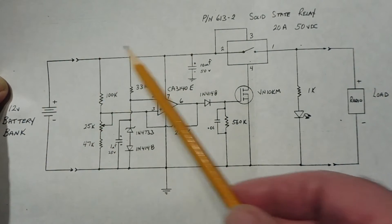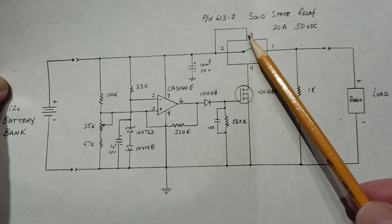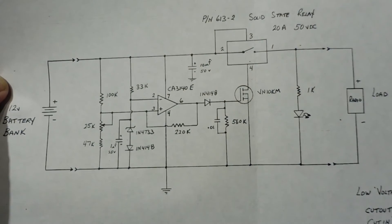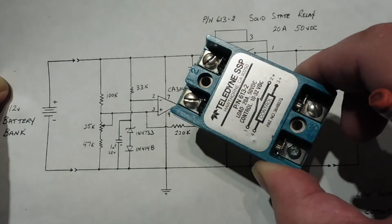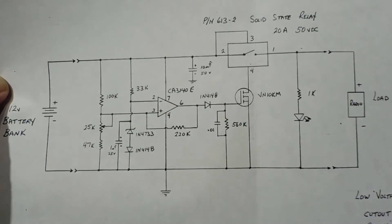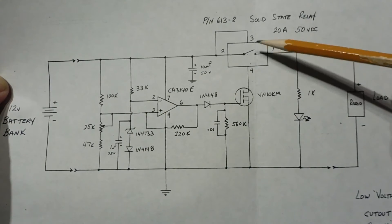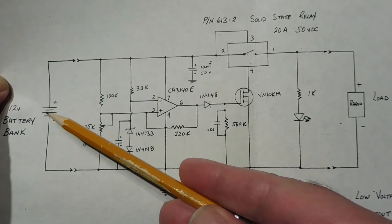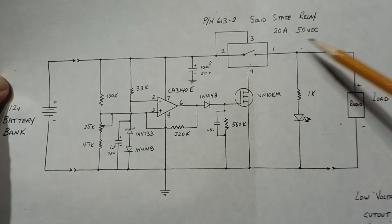Now the battery bank feeds the load through this relay. It's a solid-state relay. It can handle 20 amps at 50 volts. It looks like this. It's one of these DC solid-state relays. So when the relay is energized, when the relay is on, it's feeding the 12-volts battery bank through the relay to the load.